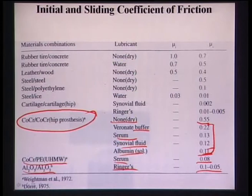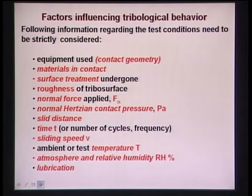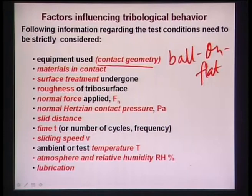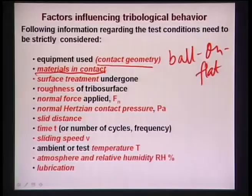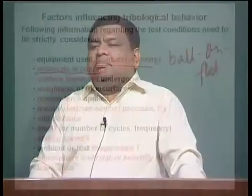Factors influencing tribological behavior include: contact geometry (ball-on-flat or pin-on-disc); materials in contact - changing the mating solid changes tribological properties; surface treatment - like biological properties, tribological properties are also surface-sensitive. The underlying substrate can be the same, but a coating changes tribological properties. For example, titanium nitride coating on titanium means tribological properties will be determined by the titanium nitride, not the titanium.